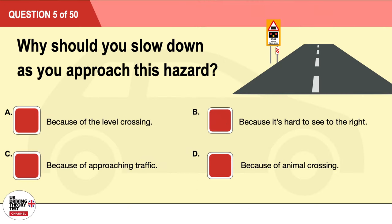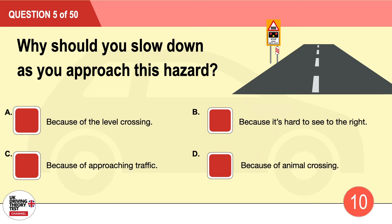Question 5: Why should you slow down as you approach this hazard? A: Because of the level crossing. B: Because it's hard to see to the right. C: Because of approaching traffic. D: Because of animal crossing. The correct answer is A: because of the level crossing.